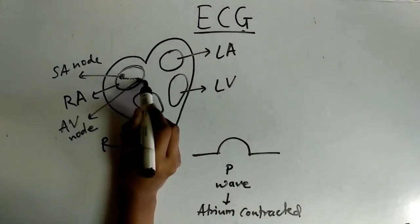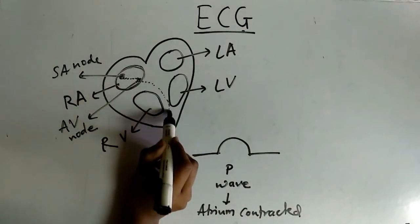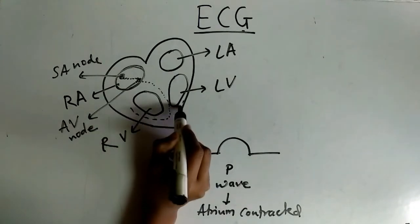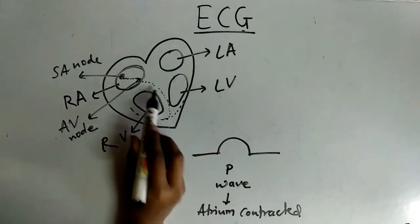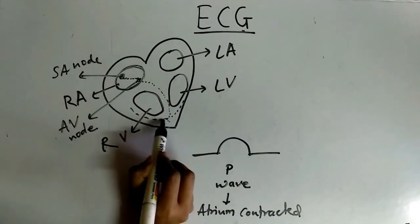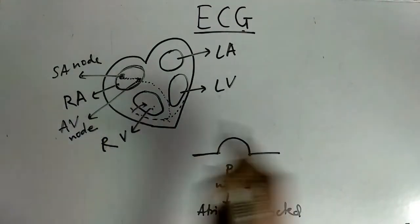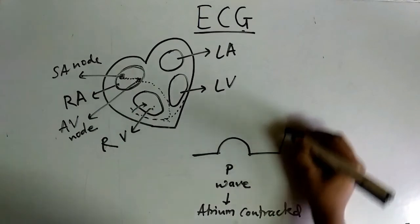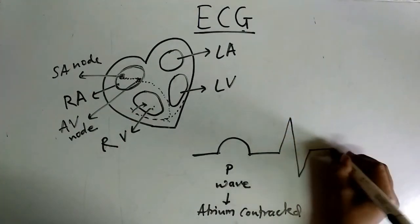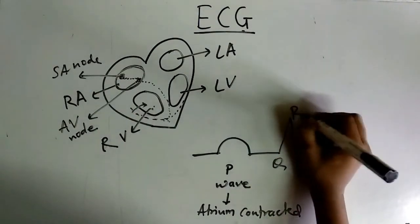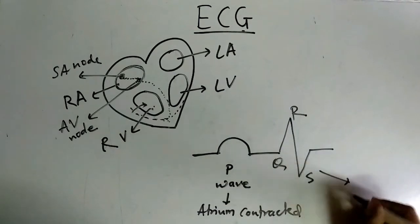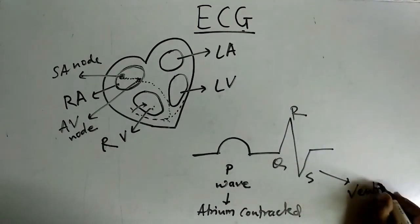Then the signals are passed to bundle of His and Purkinje fibers. The bundle of His receives the signals, passes them to Purkinje fibers, and these signals are passed to the ventricles. Then we get the peak, that is QRS. This is because the ventricles get contracted.